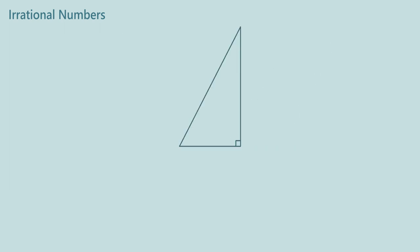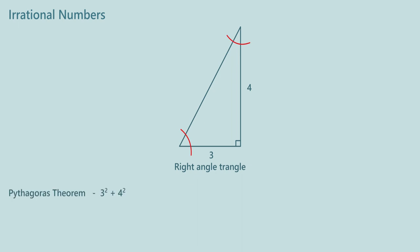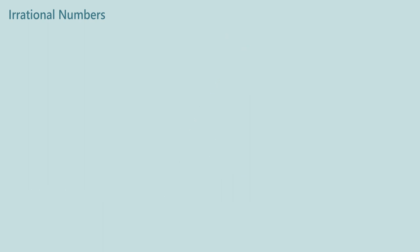Look at this triangle. This is a right angle triangle with perpendicular sides equal to 3 and 4 units. How do we find its diagonal? We use Pythagoras theorem. So the diagonal is equal to 5.